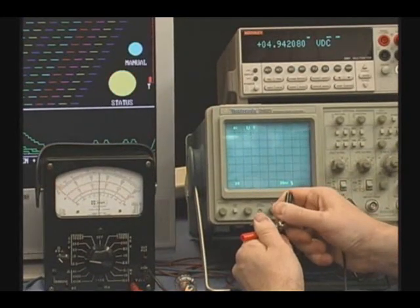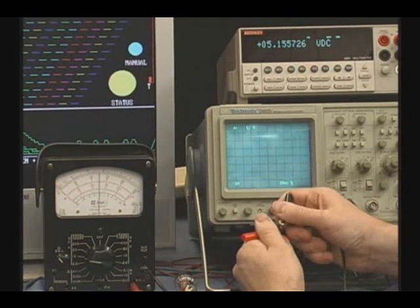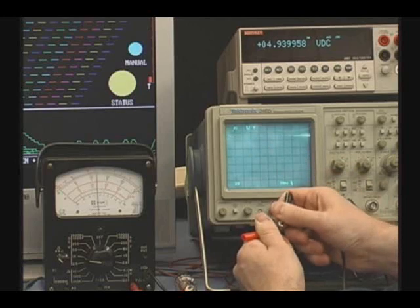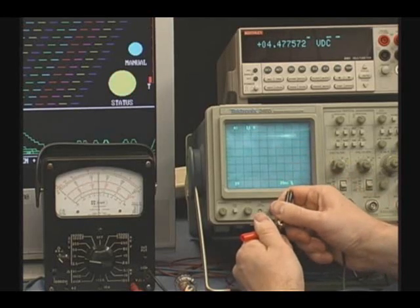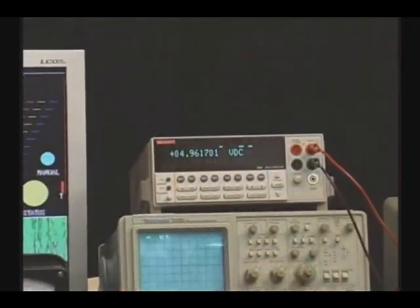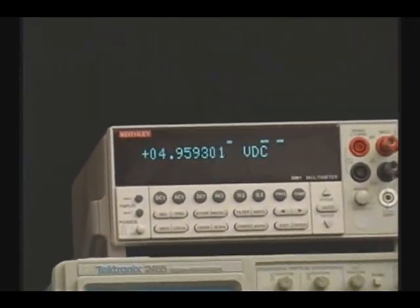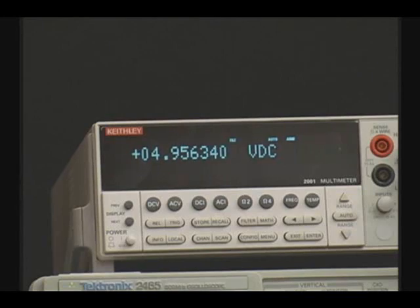The programmable digital multimeter is the backbone of the testing industry. As you can see, the meter has a difficult time tracking the voltage changes that I am creating. This difficulty is due to the high levels of digital averaging that are employed in the meter to enable it to reach its high levels of accuracy.